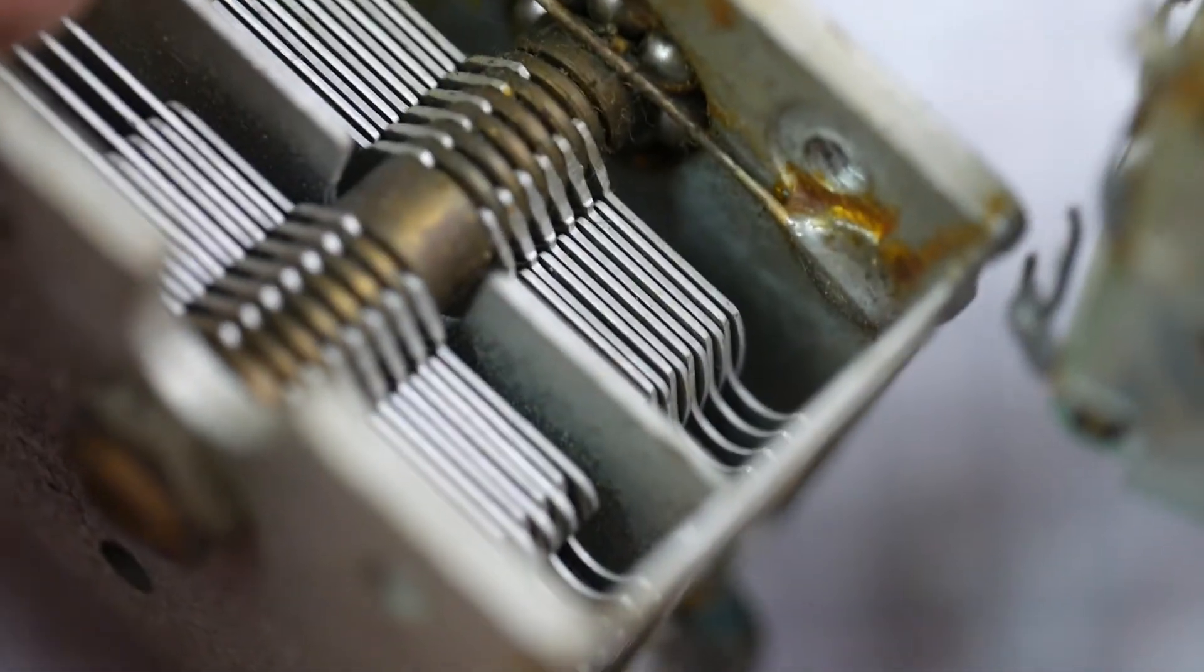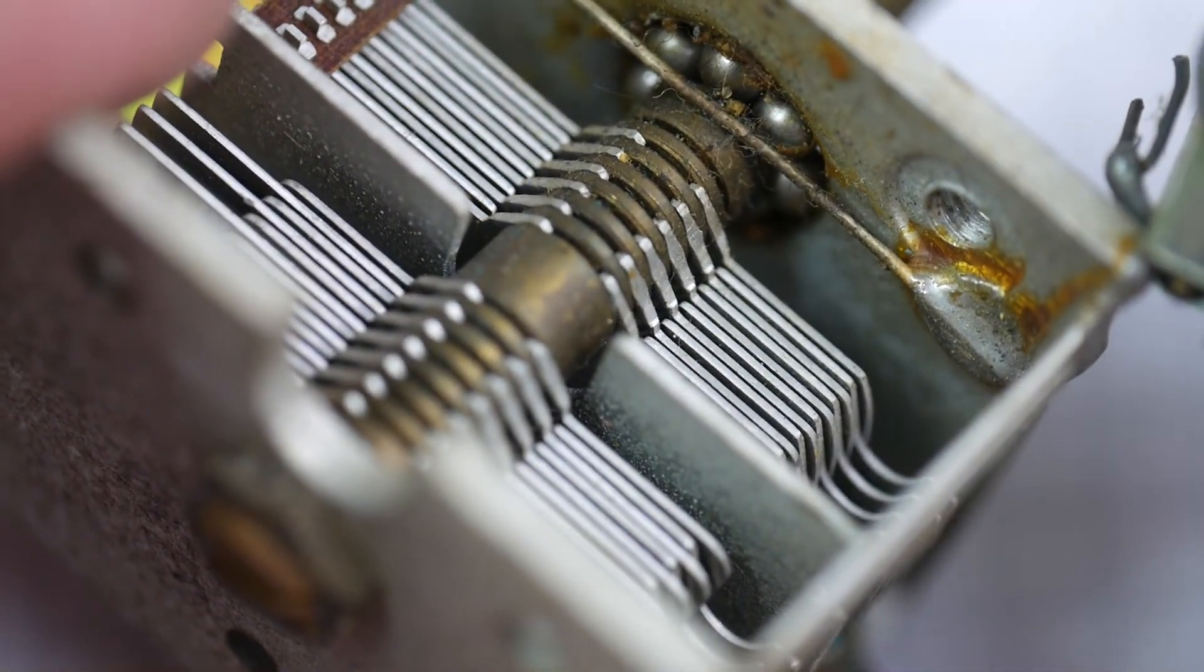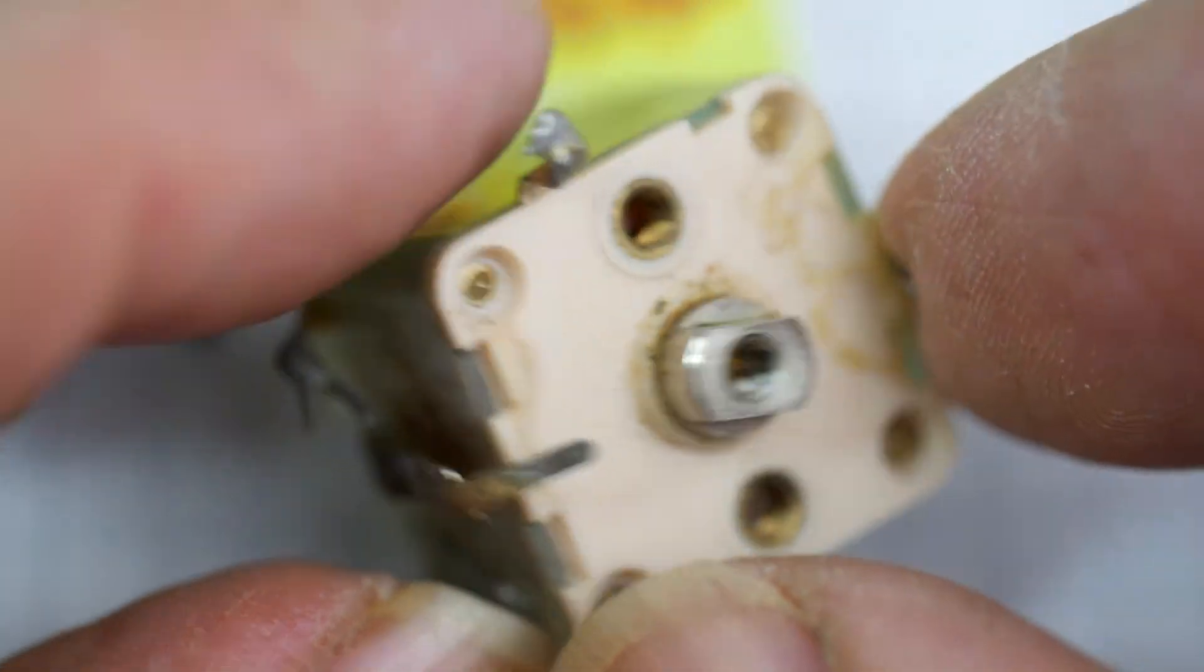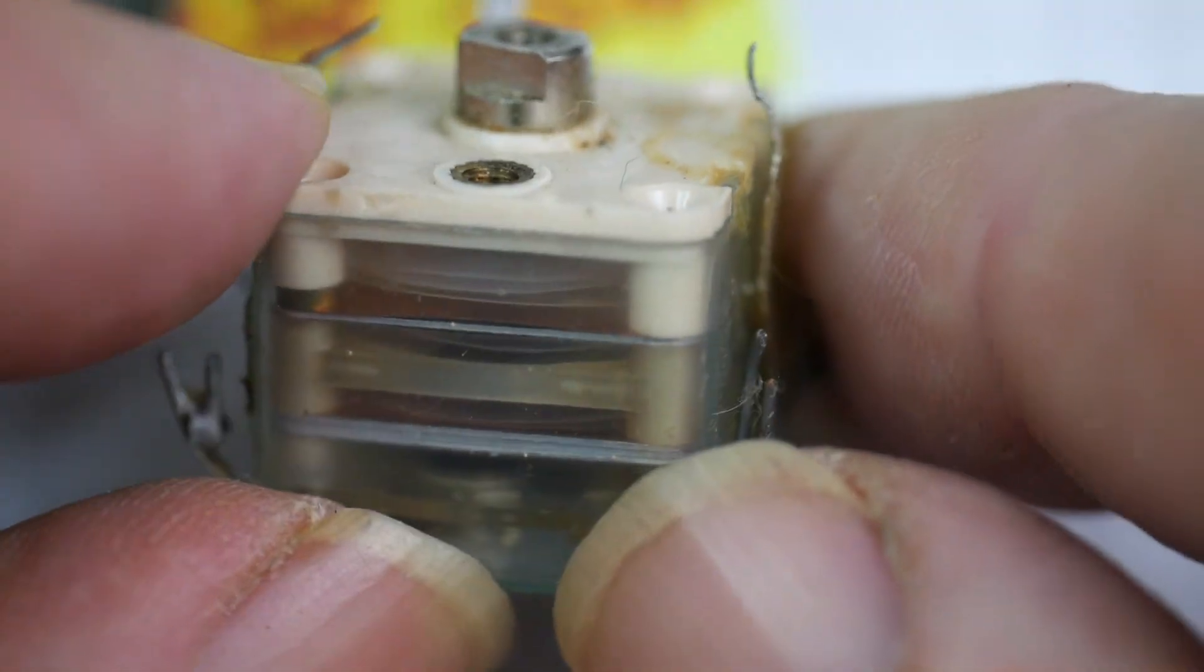It's much more compact. So this is, again, a reduction in size from the transistor radio of maybe the 60s to the 70s. Make it all smaller. A constant effort to make everything smaller in electronics.